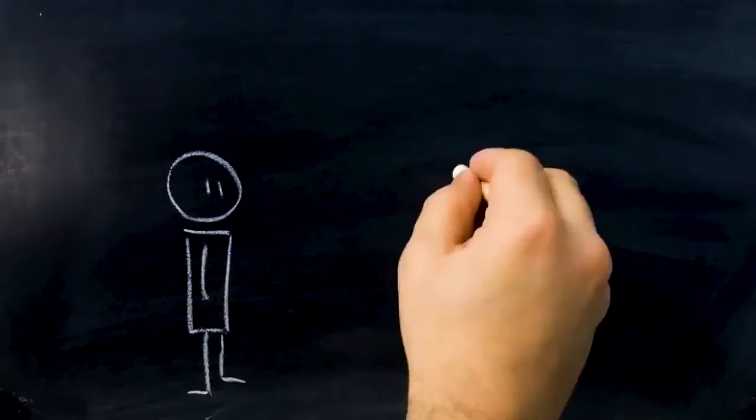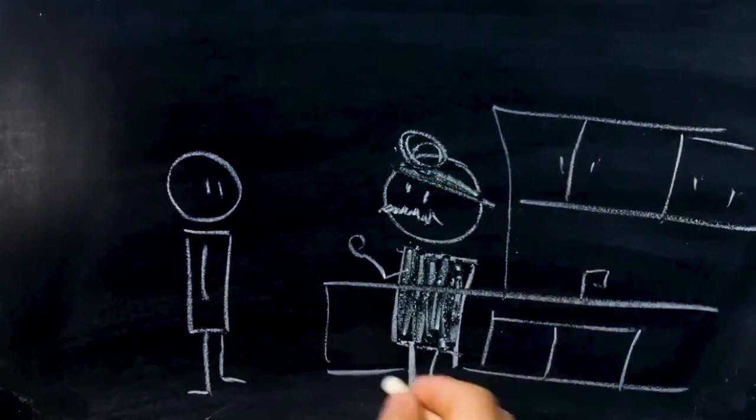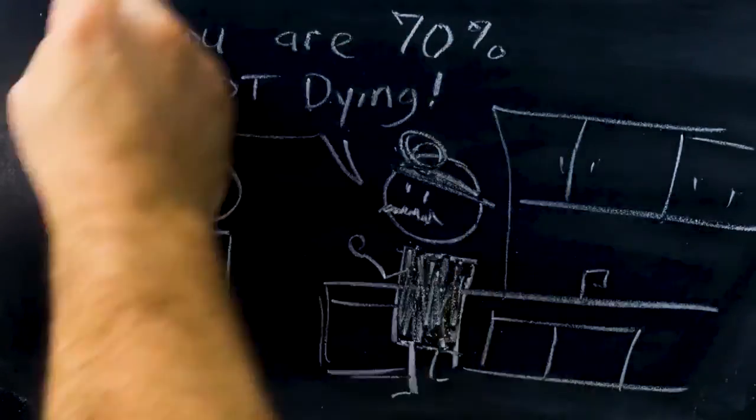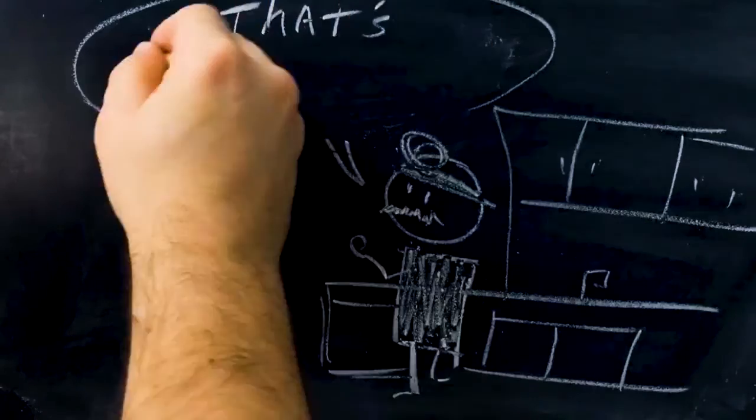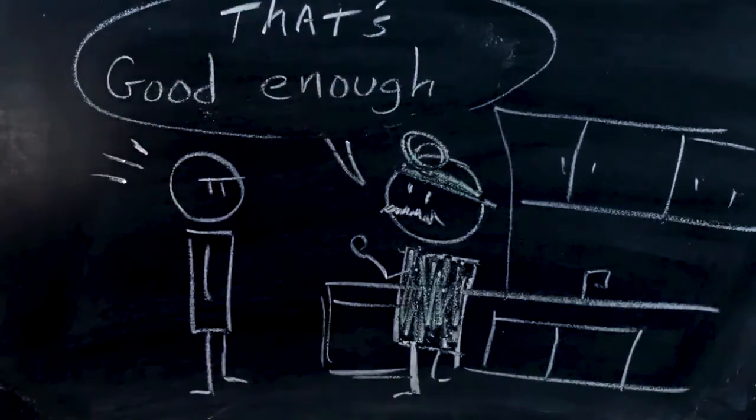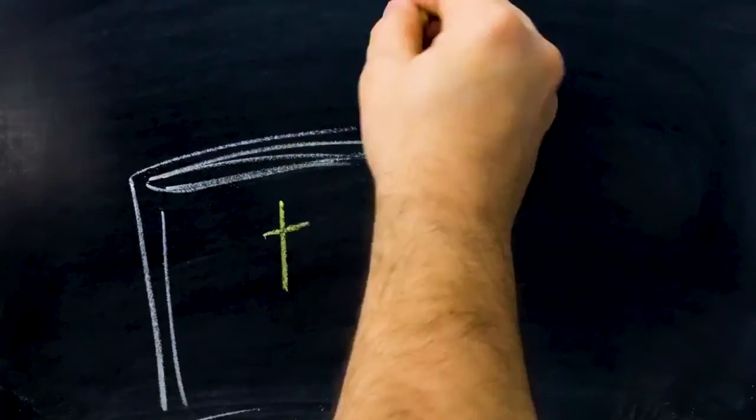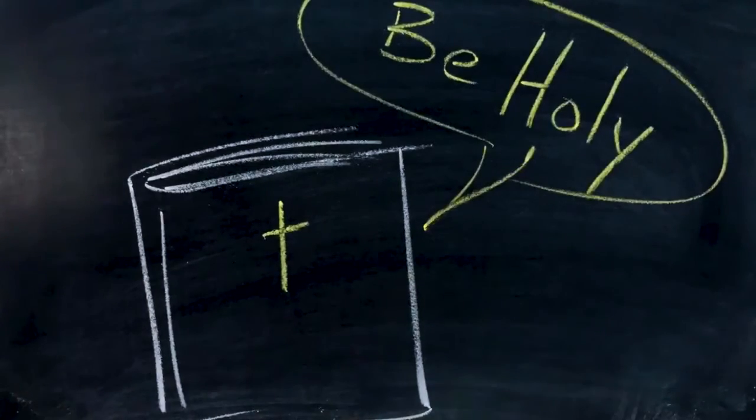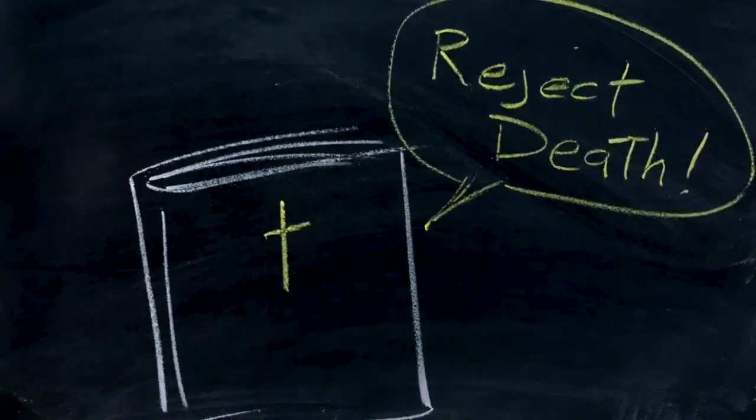Imagine you went to your doctor asking for help, and he said, On a scale of 1 to 10, you're around 7 healthy. That's good enough. You only have one or two terminal diseases, but think about all of the terminal diseases you don't have. Would you be content with that? Do you wish to be mostly healthy or completely healthy? When the Bible says, Be holy just as God is holy, it means we ought to reject any sickness of spirit and heart, just as we would reject any sickness of body or mind.